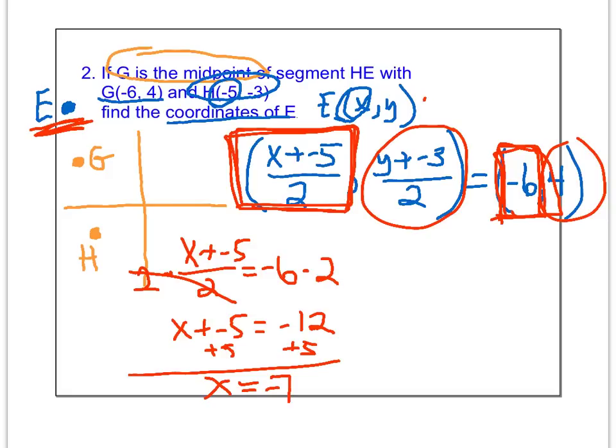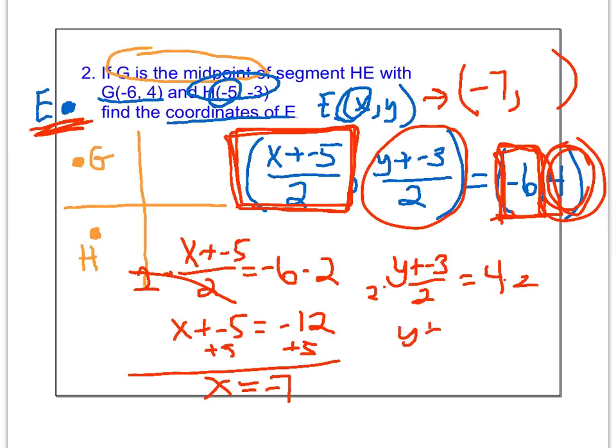Now remember, that is the X value of point E. Do the same thing for the Y value. Y plus negative 3 divided by 2, this time it's going to equal 4, because 4 is the Y value of the midpoint. Same thing I did over here. I'm going to multiply both sides by 2. That gives me Y plus negative 3 equals 8. Add 3 to both sides, and we've got our answer. Y equals 11.